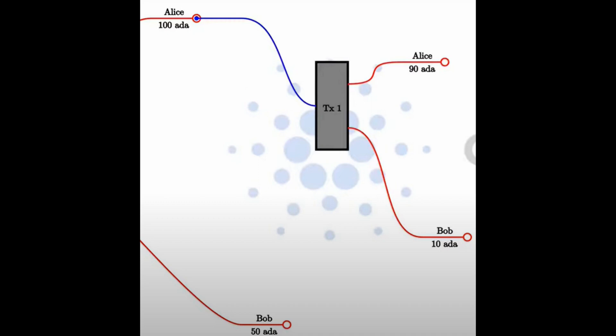Alice starts off with her 100 ADA and sends all of it into the transaction. The transaction then splits it into two UTXOs — multiple UTXO outputs. Alice receives her change of 90 ADA, and Bob gets a UTXO of 10 ADA. Bob now has two UTXOs in his wallet: one with 50 ADA and one with 10 ADA. Think of a UTXO like a dollar bill — you can't tear it in half. You give over the full ten dollars and receive your five dollar change.